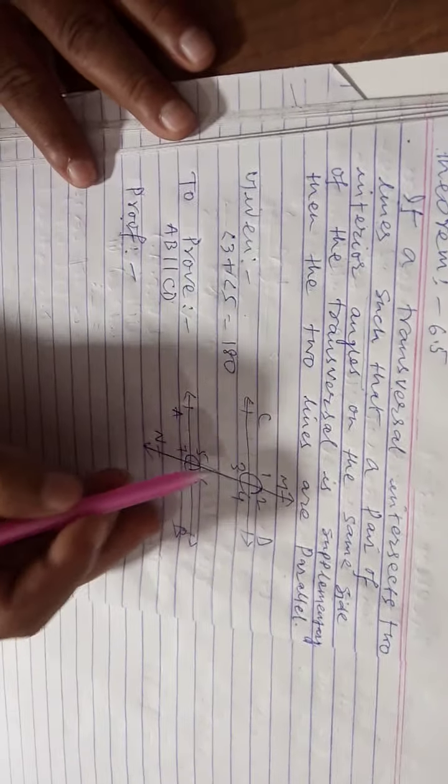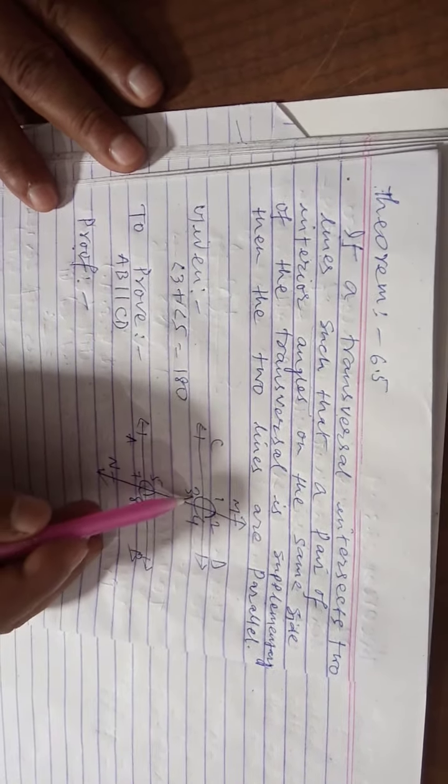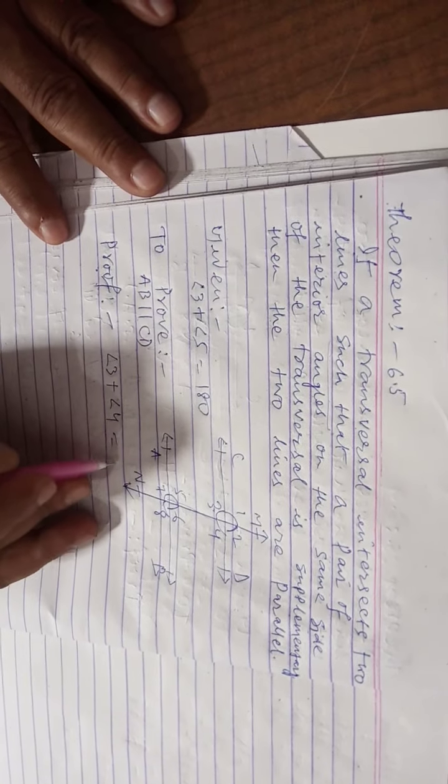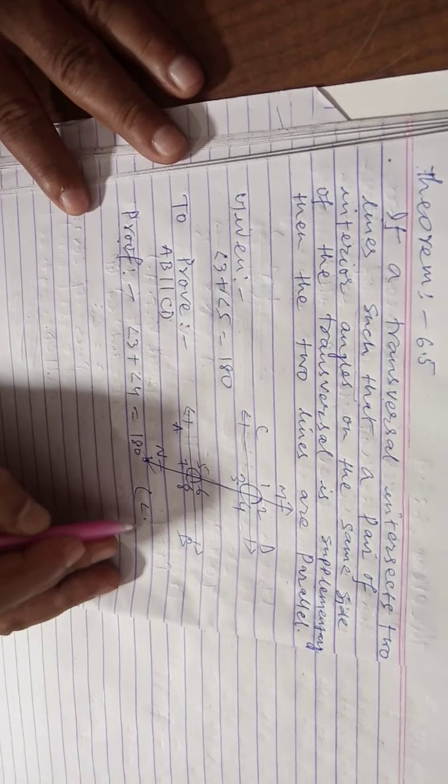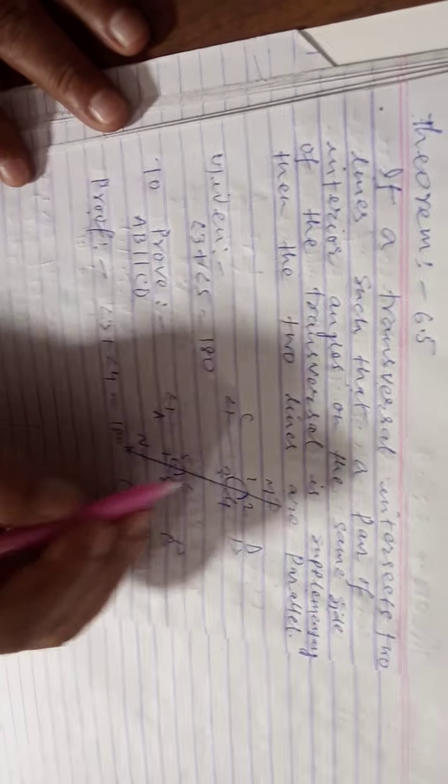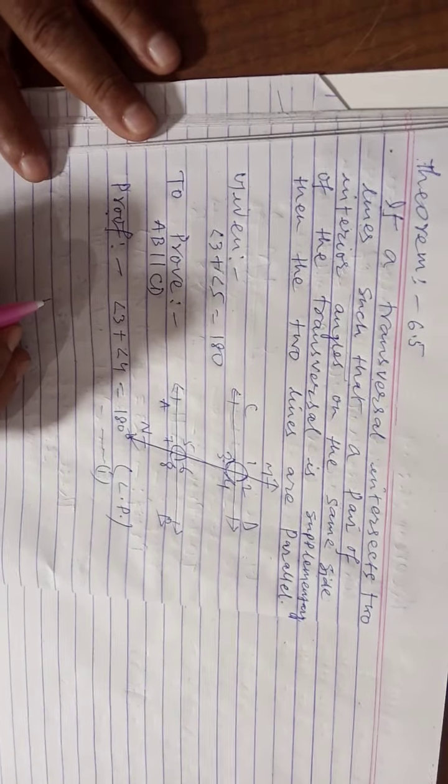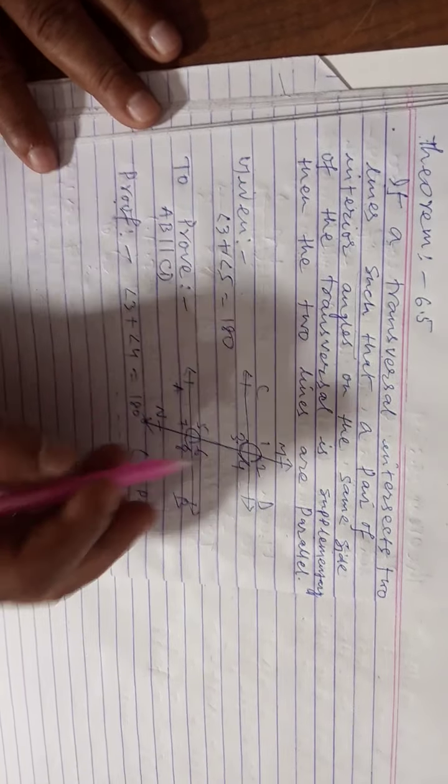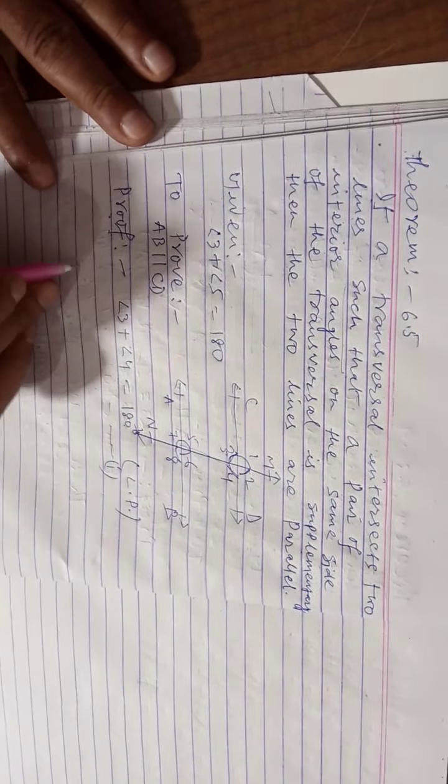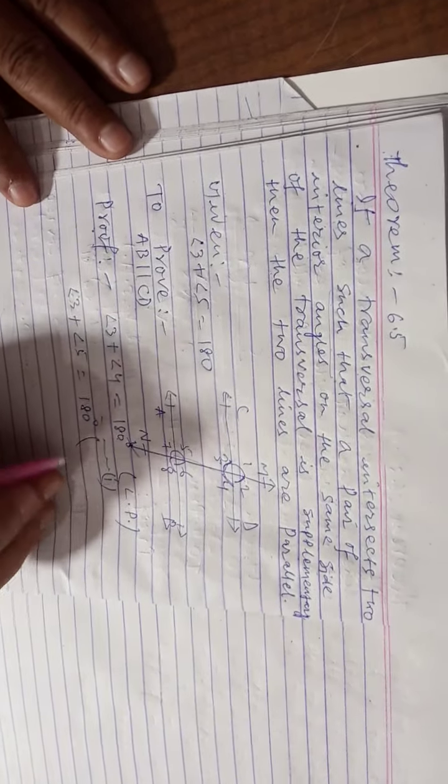Angle 3 plus angle 5 equals 180. Angle 3 plus angle 4. Angle 3 plus angle 4 equals 180 degrees because angle 3 and angle 4 form a linear pair. Angle 3 and angle 4 linear pair form, linear pair 180 degrees. So this is angle 3 plus angle 4 equals 180. But it is given that angle 3 plus angle 5 is equal to 180 degrees.